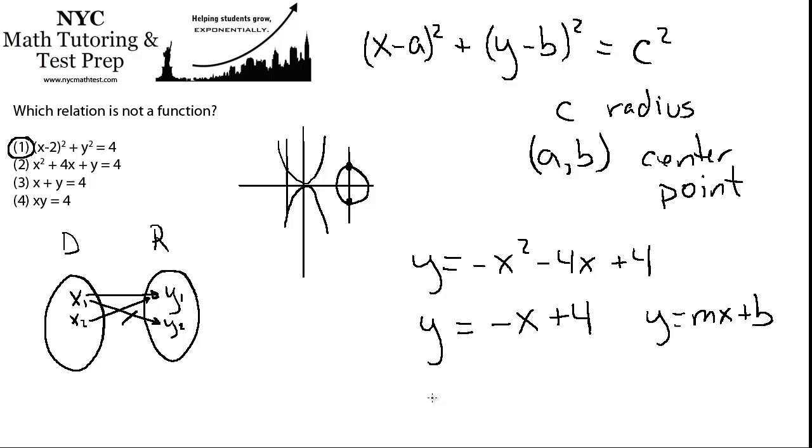And lastly, the fourth one, the fourth one's a little different, so you might be tempted to take a deeper look at this one, is xy = 4. But what happens when you get y by itself? y equals 4 over x.